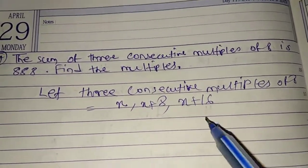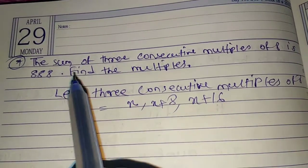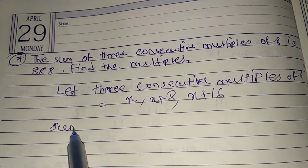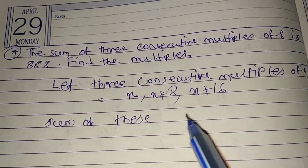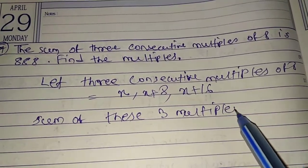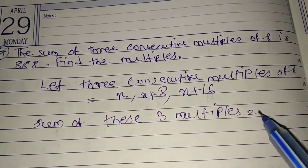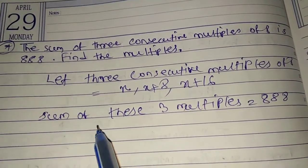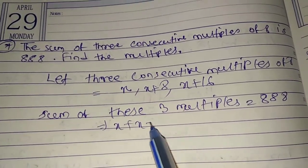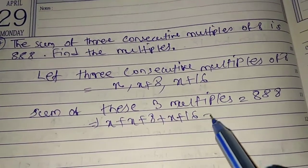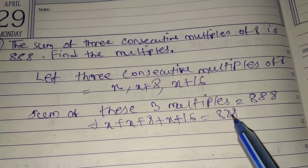Sum of these three multiples equals to 888. We have to add this: X plus X plus 8 plus X plus 16 equal to 888.